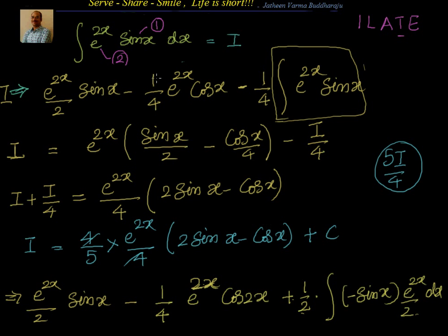Now if you understand, we started with e power 2x sin x and both these functions — none of their derivatives go to a constant. e power 2x keeps going, multiplying by 2 on differentiation or dividing by 2 on integration. Sin x differentiates to cos x, cos x to minus sin x, minus sin x to minus cos x — basically we go into the same loop. So we end up with a part of i again after the second integration by parts, then take it to the left hand side and simplify to find the answer.